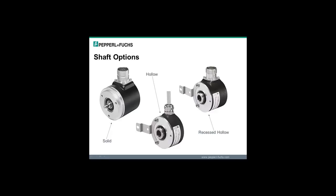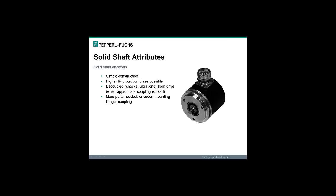The three shaft options are solid, hollow, and recessed hollow. The solid shaft encoder has a simpler construction compared to the hollow and recessed hollow shaft. Higher IP protection is possible. You will need a coupler to attach the encoder shaft to the rotating shaft that needs to be monitored. Overall there would be more accessories that you will need compared with the hollow and recessed hollow shaft encoders.